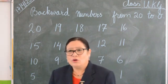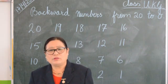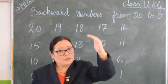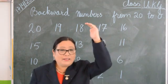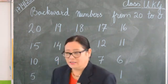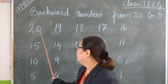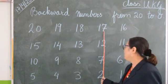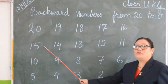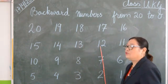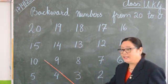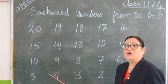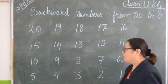And do you know children what is backward counting? What is called backward counting? Backward counting means from a big number to a small number. Now let's start. From 20 we will start. 20, 19, 18, 17, 16, 15, 14, 13, 12, 11, 10, 9, 8, 7, 6, 5, 4, 3, 2, 1, 0.